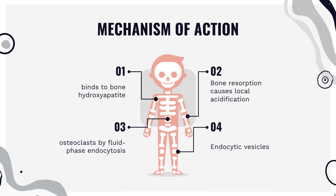Mechanism of Action: Bisphosphonates are taken into the bone, where they bind to hydroxyapatite. Bone resorption by osteoclasts causes local acidification, releasing the bisphosphonate, which is taken into the osteoclast by fluid-phase endocytosis. Endocytic vesicles become acidified, putting bisphosphonates into the cytosol of osteoclasts where they act.